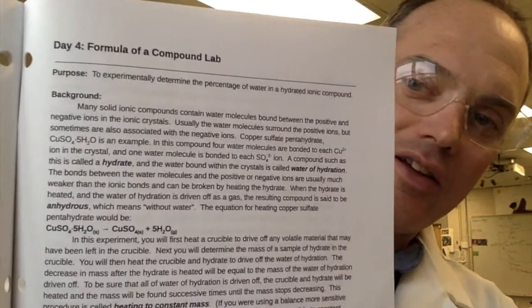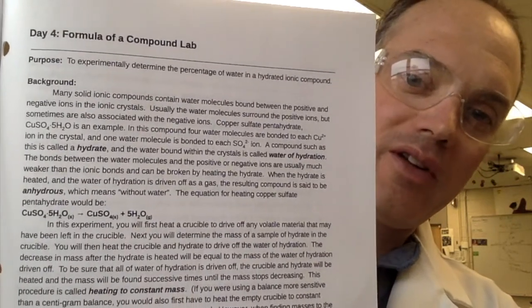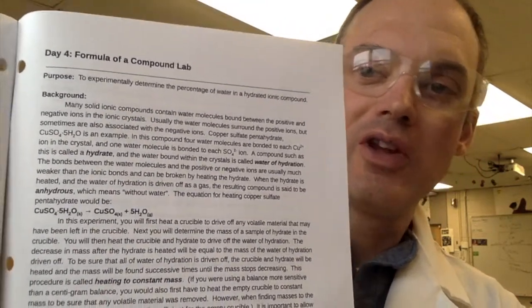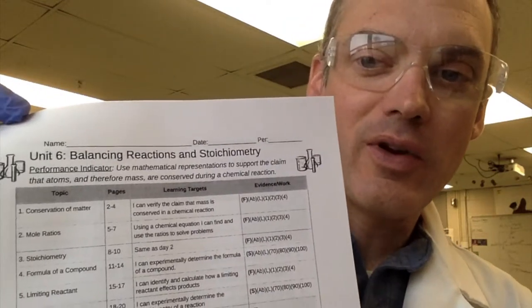Hello. Time to complete our lab. We're looking at the formula of a compound lab. So we're trying to determine the formula of the compound for Unit 6 balancing reactions and stoichiometry. In this experiment you're going to determine the percent of water in a hydrated compound. So let's take a look at the lab setup.